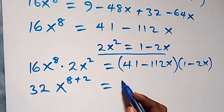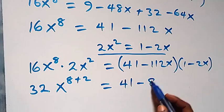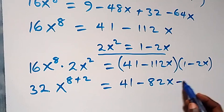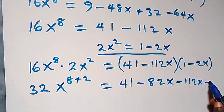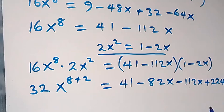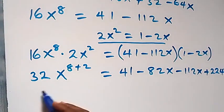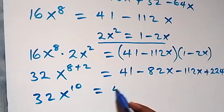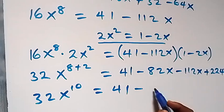On the right side we multiply (41 - 112x) by (1 - 2x). Expanding the bracket: 41 times 1 is 41, minus 41 times 2x giving 82x, then minus 112x times 1 giving minus 112x.